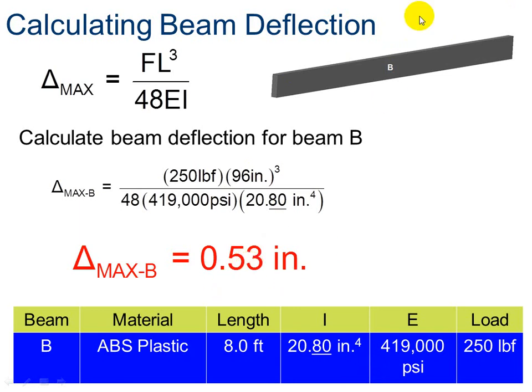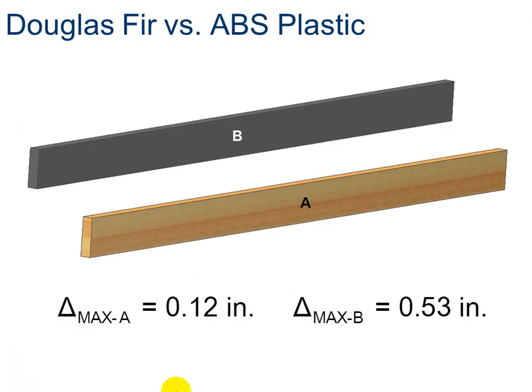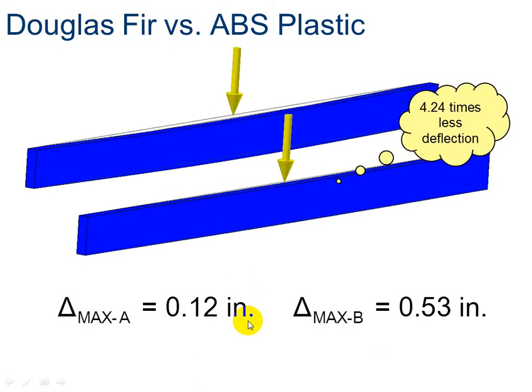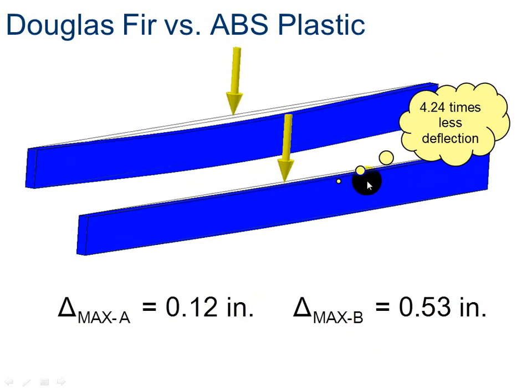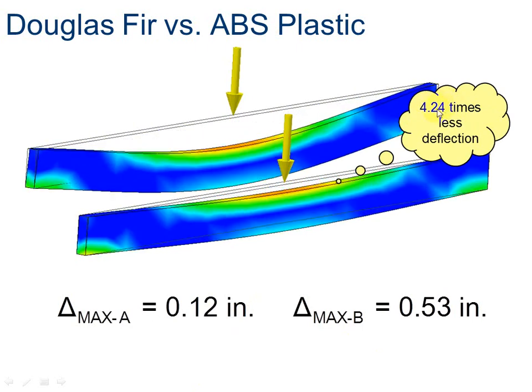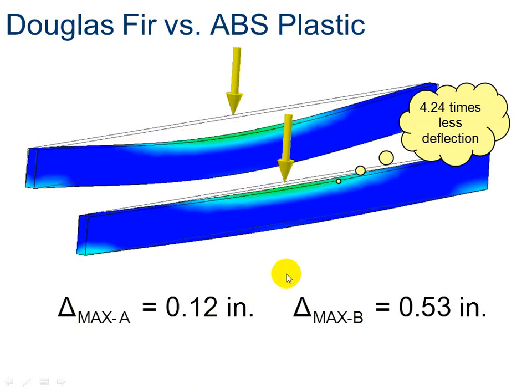So now we can tell the difference between the plastic beam and the Douglas fir beam. So the amount of deflection for A is only 1,200 of an inch. The amount of deflection for B is 53 hundredths of an inch. And so because of the plastic and the thing that was changed was our modulus of elasticity, because of the elastic property of plastic, it's going to deform more than the Douglas fir. So we have less deflection here, about a little more than four times less deflection on the wood than on the plastic.